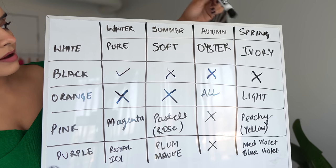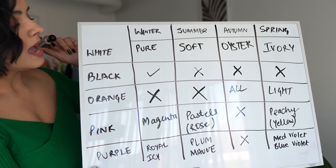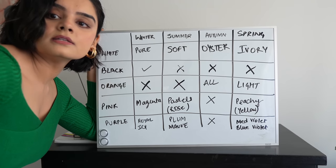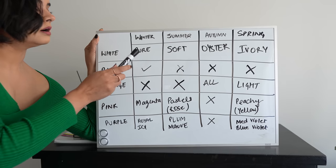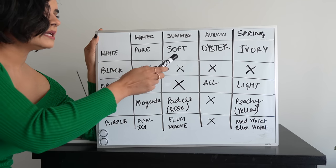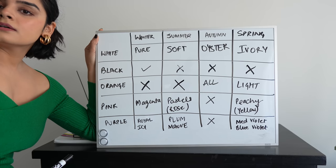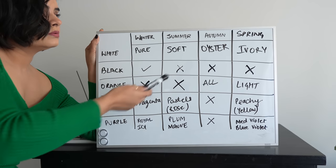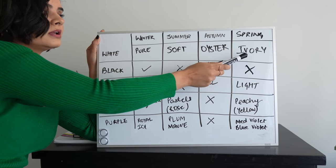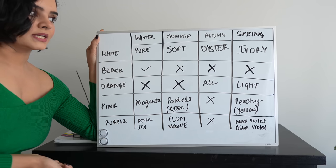Let me show you the table I came up with. Up here we have all four seasons — winter, summer, autumn, and spring — and on the left are the colors you should really pay attention to. Neutrals such as white and black will be the backbone of your draping process. If pure white and black suit you and really bring out your complexion, then you are a winter season. If soft white suits you best but black makes you look sick and pasty, then summer is your season. If oyster white works best for you and black does nothing, bringing out fine lines or dark circles, then autumn is your season. And for spring, black doesn't work, but ivory white looks best on your skin compared to pure white.